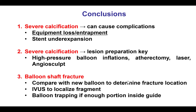Several lessons from this case. The first is that severe calcification can cause problems, and one of those problems is equipment loss or entrapment — an angiosculpt balloon in this case, but stents can be lost and other equipment as well. This can be prevented by very careful preparation of the vessel. In the ROTAXUS trial, 2% of the balloon angioplasty arm did have stent loss. Another complication is that we can get a stent there but cannot expand it.